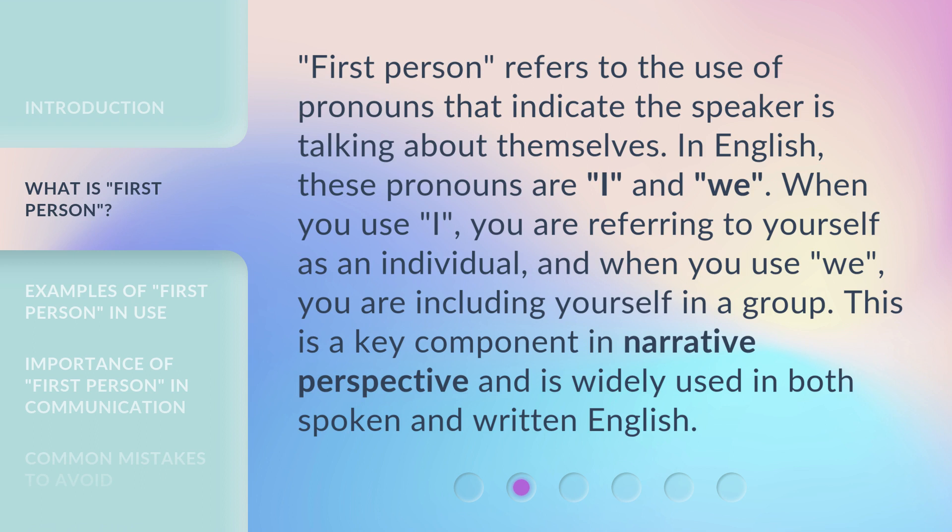First person refers to the use of pronouns that indicate the speaker is talking about themselves. In English, these pronouns are I and we. When you use I, you are referring to yourself as an individual, and when you use we, you are including yourself in a group. This is a key component in narrative perspective and is widely used in both spoken and written English.